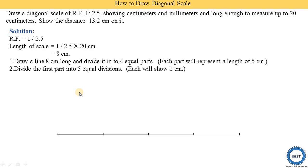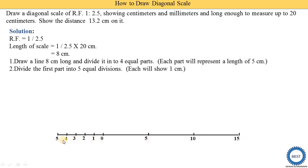Divide the first part into five equal divisions. This first part is 2 centimeters long, so 2 divided by 5 means one division is 0.4 mm, and that 0.4 mm distance represents 1 centimeter. We then give the numbering: starting with zero, then 5 centimeters, 10, 15 — and the subdivisions are 1, 2, 3, 4, and 5 centimeters.